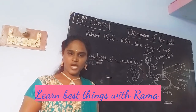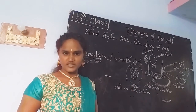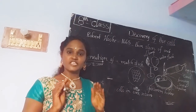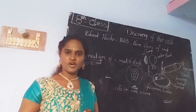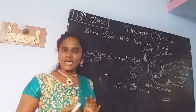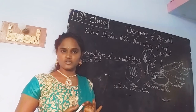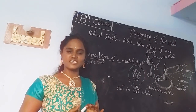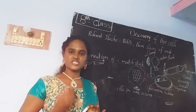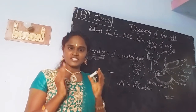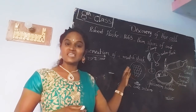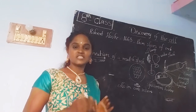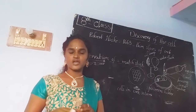Whenever we talk about the history of the cell, it is very important to talk about a scientist named Robert Hooke. For the first time, he observed the cell in the thin slices of cork plant.